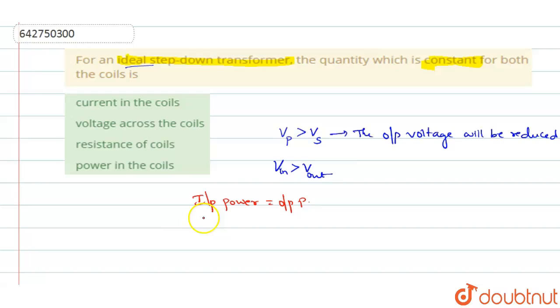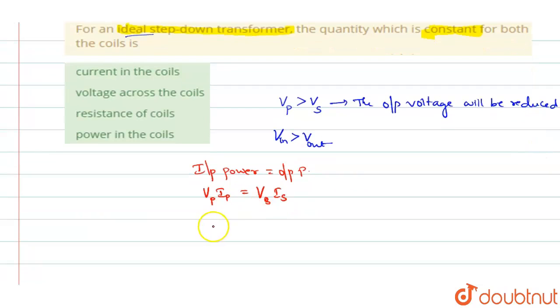Input power means it is across the primary, output power is across the secondary. Input power will be VP into IP which is equal to the output power VS into IS. When you are taking the ratio between them, you can say VP by VS will be equal to IS by IP.